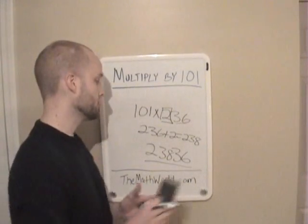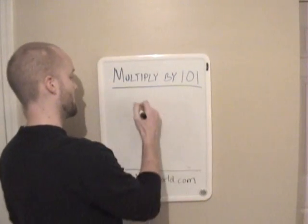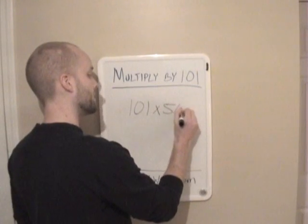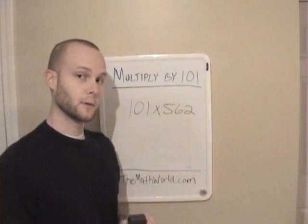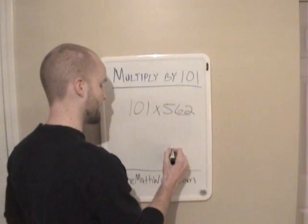I'm going to do one more example, and that will be it. So we'll do 101 times 562. So again, the first thing we're going to do is write down these first two numbers, 62. That's going to be part of our answer.